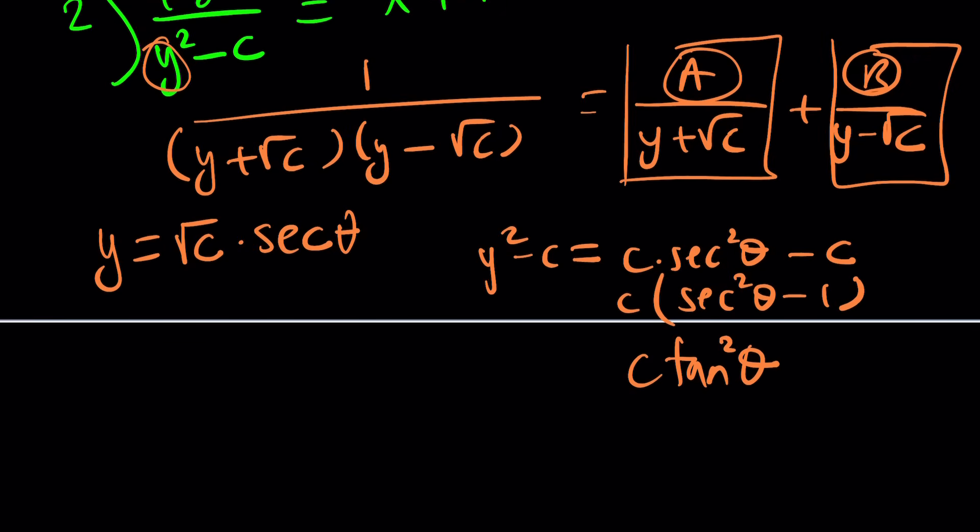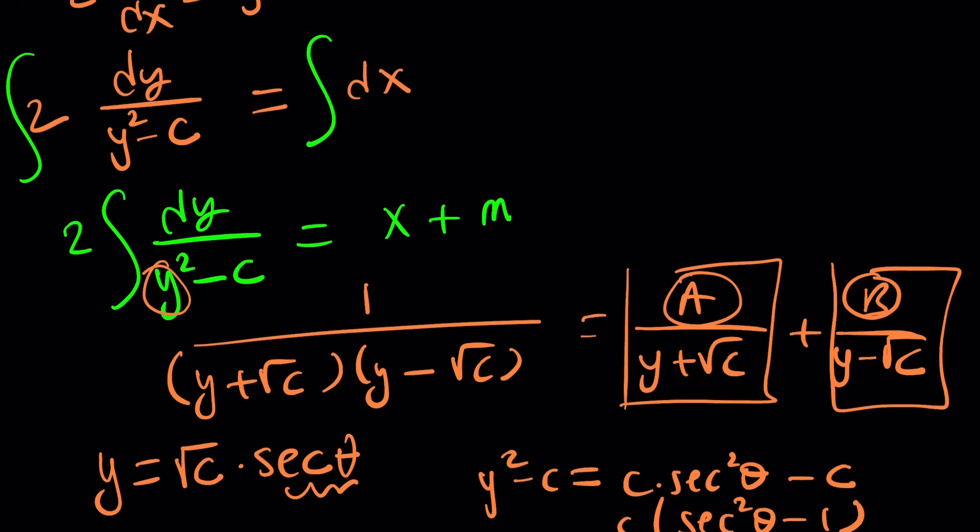And the reason why we use secant is because when we replace y with that, here's what y squared minus c is going to turn into. It's going to be c times secant squared. And then you're going to subtract c from it. And when you factor out c you'll get secant squared minus 1 which is tangent squared. So that's going to give you something nice. But you also have to consider dy. And dy is going to be the derivative of secant which is secant times tangent. But guess what? You can do the rest. So I trust you on that one.